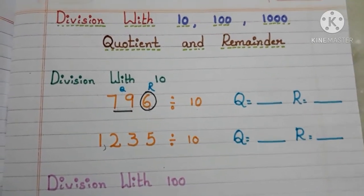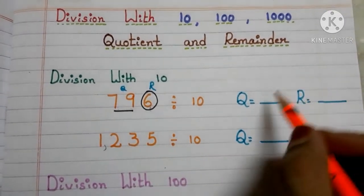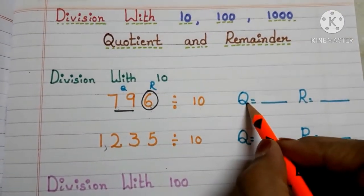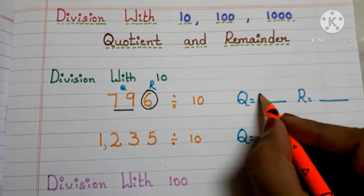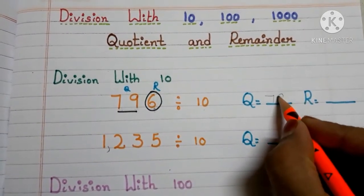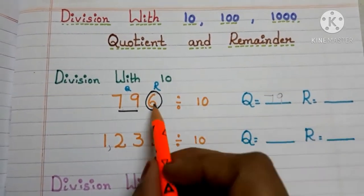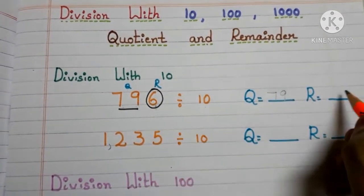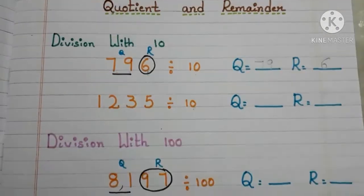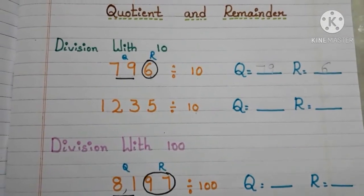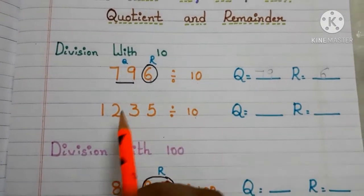Let us write here. The quotient is 79 and the remainder is 6. Okay, let us go to another example.